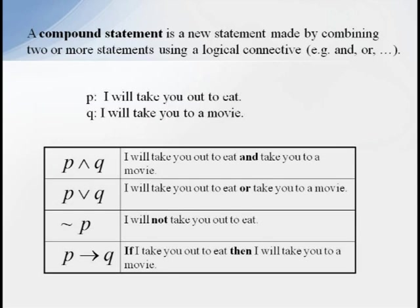When we combine two or more statements using logical connectives, we sometimes call the result a compound statement. In the example below, let's let p represent the statement, I will take you out to eat, and q represent the statement, I will take you out to a movie. Then p and q represents the new compound statement, I will take you out to eat, and take you to a movie.